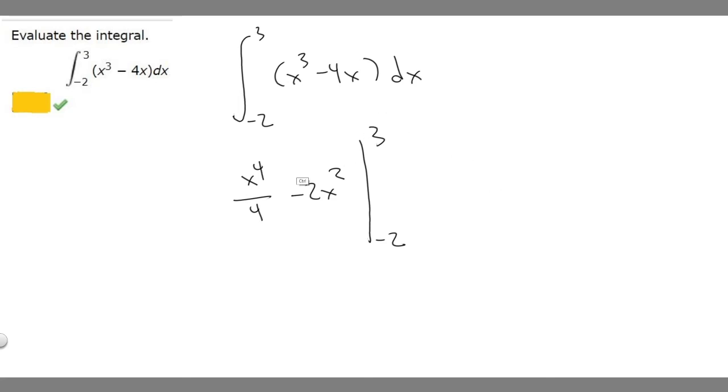Let's go ahead and do that. So if I plug in 3, 3 to the 4th power is 81, and then we divide by 4. Then we subtract 2 times 3 squared. So 3 squared is 9, and minus 2 times 9 is minus 18.